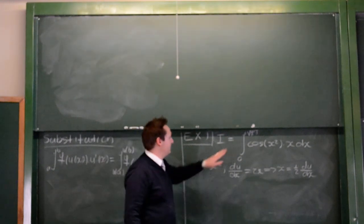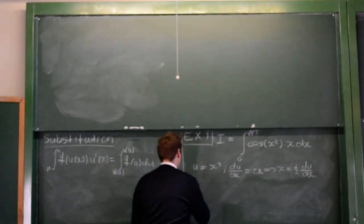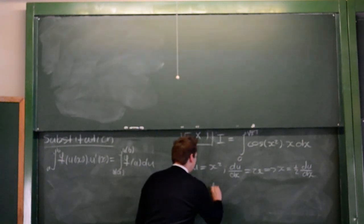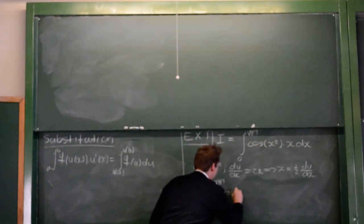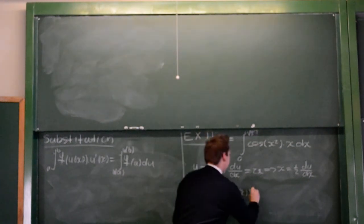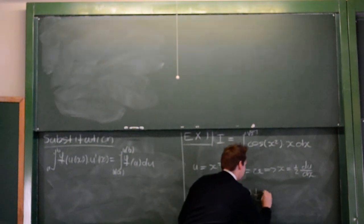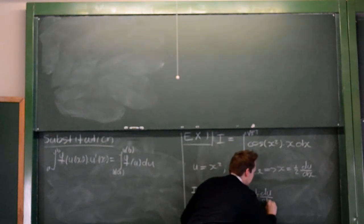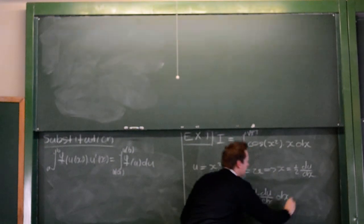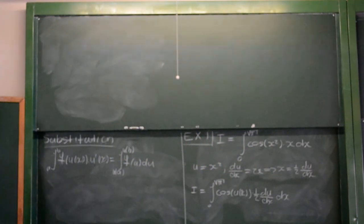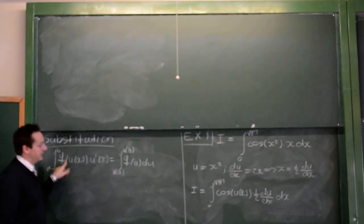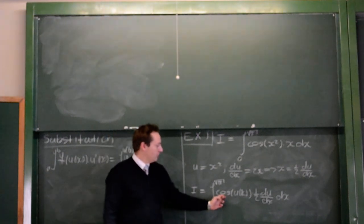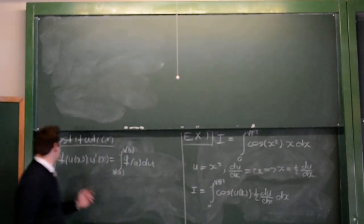If we substitute these expressions into our integral from 0 to root pi, we get cos of u of x times x, and x is a half du/dx. So, what we have here is exactly the left-hand side of the substitution rule, with the function f here being replaced with cos. So, the cos function is the function f here.